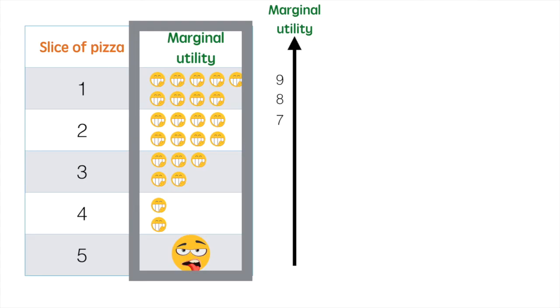For the y-axis, we'll include the numbers 1 to 9 as the peak utility was 9. For the x-axis, we'll include the numbers 1 to 5 as my overall consumption was less than 5 slices.